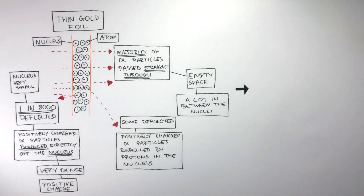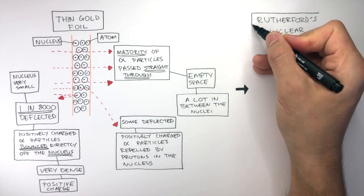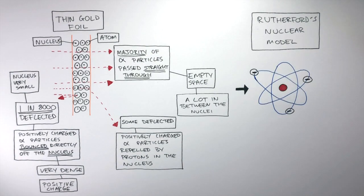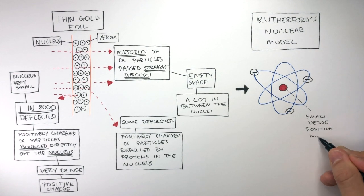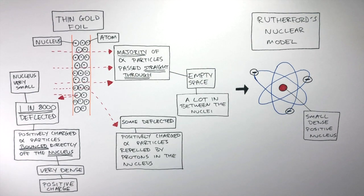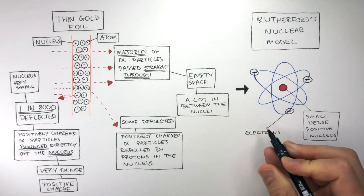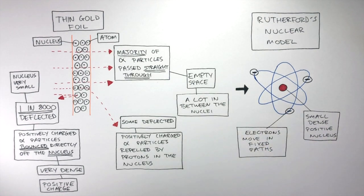Having described and analysed Rutherford's gold foil experiment, we can now understand Rutherford's nuclear model, which is another way of saying Rutherford's atomic structure. The nuclear model shows how there is a small, dense, positive nucleus at the centre of the atom, and electrons move in a fixed path but in random locations.